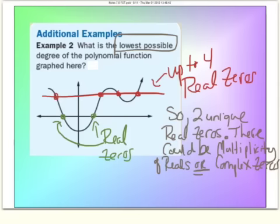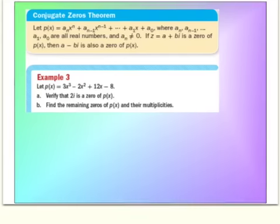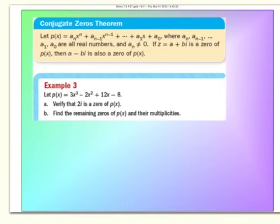The next slide covers the Complex Conjugates Theorem — Objective 22: understand and verify that complex zeros occur in pairs. If one zero is an imaginary number a plus bi, then its complex conjugate a minus bi is also guaranteed to be a zero. They always happen in pairs.